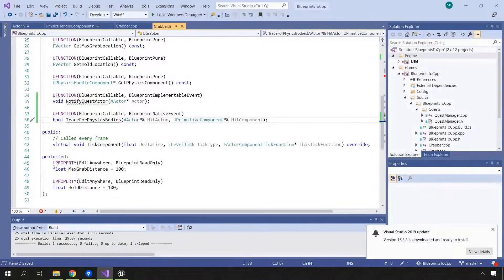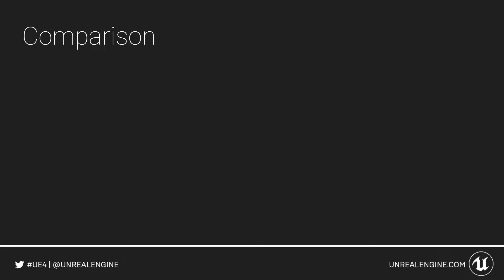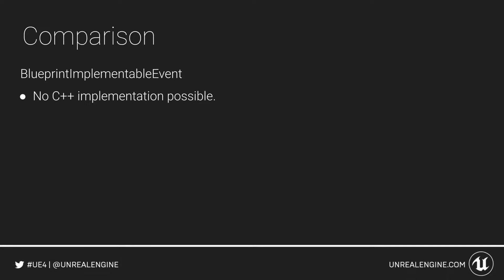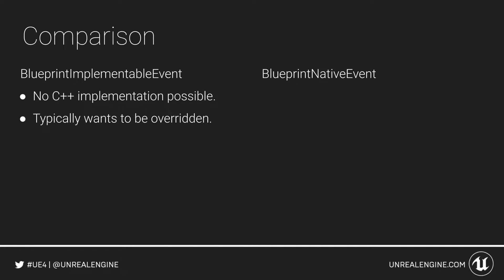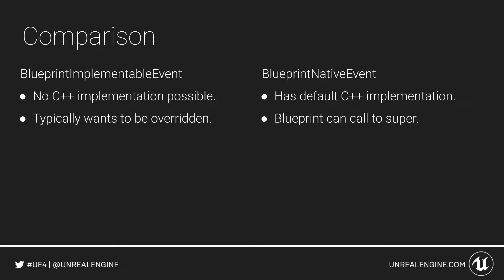Now let's look at the comparison between blueprint implementable event and blueprint native event more thoroughly. With a blueprint implementable event, there is no C++ implementation possible — everything has to happen in blueprint and it needs to be overridden in blueprint. On the other hand, the blueprint native event has a default C++ implementation and can be overridden in blueprint, and the blueprint can call the C++ implementation. It's much more like a virtual function that can be implemented in blueprint but doesn't have to be.